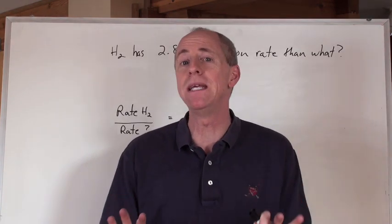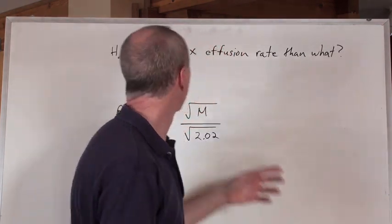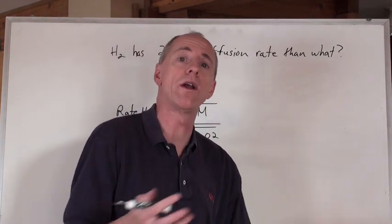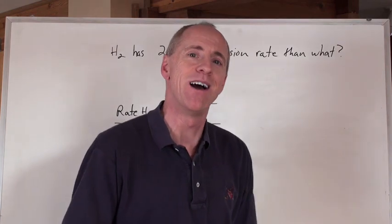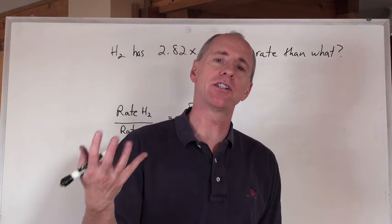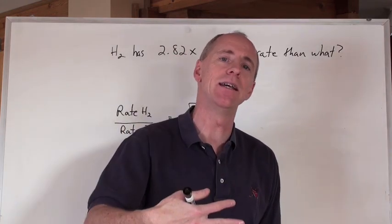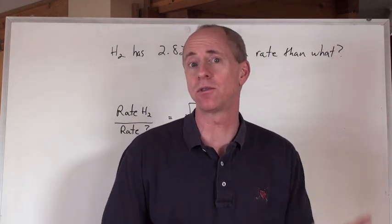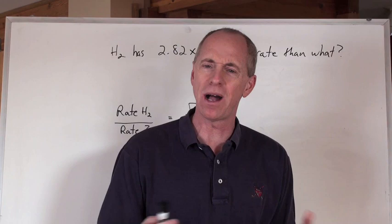But the question could be, using that same formula, hydrogen has 2.82 times the effusion rate than what other chemical, or what other gas? So now you've got to actually find out the identity of that substance, or at least the molar mass of that substance, and then find the identity of it. Well, how would you do that?